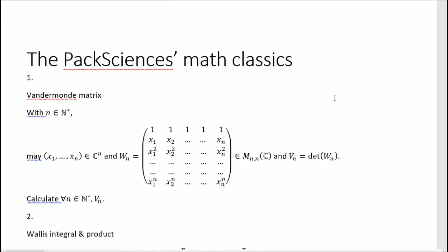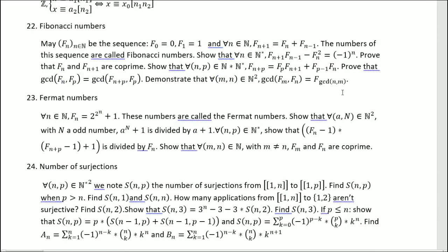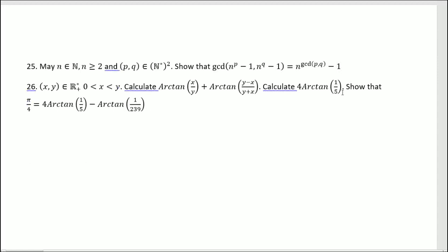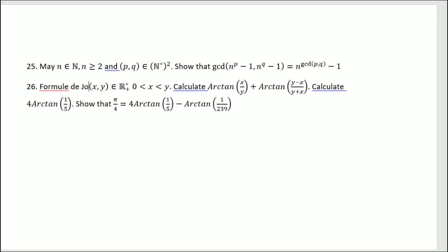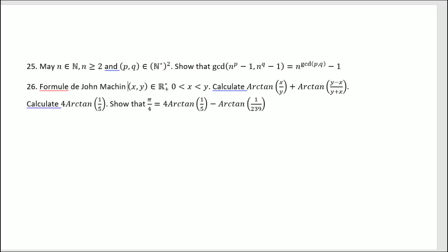Hello and welcome to this episode of The Classics. Today we'll be looking at exercise 26. It's called in French, Formule de John Machin, or machine. I don't know how to pronounce it. So the formula of John Machin, I don't know how to pronounce his name, sorry.